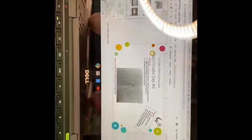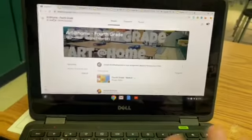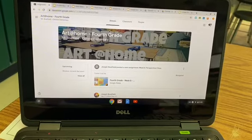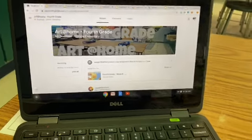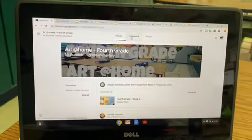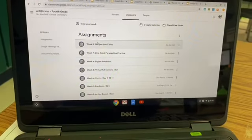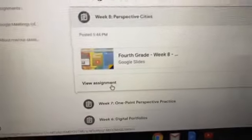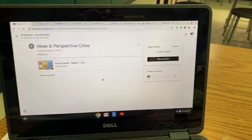But before we do that, let's talk about your resources. If you could, please go ahead and open your Chromebook. I want you to go to the fourth grade Google website, whatever, and give me a thumbs up. Awesome. Next, I want you to go to classwork. We are on week eight perspective cities. Go ahead and press view assignment, and it should look like this. Give me a thumbs up.